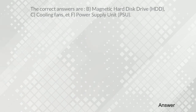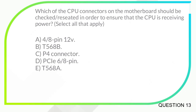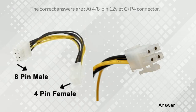The correct answers are B. Magnetic hard disk drive, HDD. C. Cooling fans. F. Power supply unit, PSU. Which of the CPU connectors on the motherboard should be checked/reseated in order to ensure that the CPU is receiving power? Select all that apply. A. 4/8-pin 12V. B. T568B. C. P4 connector. D. PCIe 6/8-pin. E. T568A. The correct answers are A. 4/8-pin 12V, and C. P4 connector.